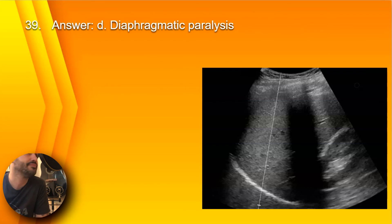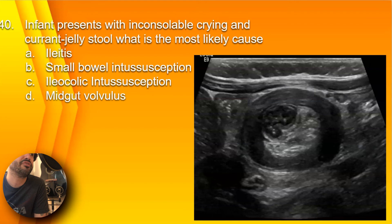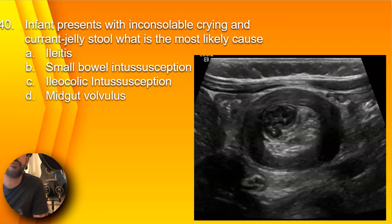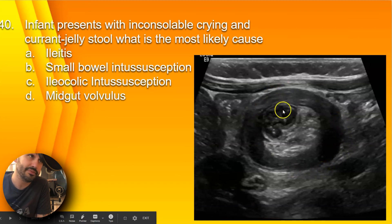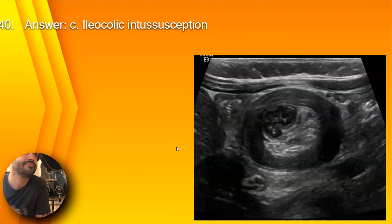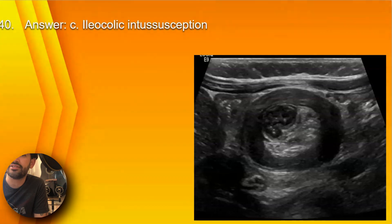Question 40: An infant presents with inconsolable crying and currant jelly stool. What is the most likely cause? A, ileitis (inflammation of the ileum); B, small bowel intussusception; C, ileocolic intussusception; or D, midgut volvulus? In this image you have a very clear case of a target lesion or bullseye lesion — that is ileocolic intussusception. So the answer is C, ileocolic intussusception. Stay tuned for the next 10 questions. Take care.